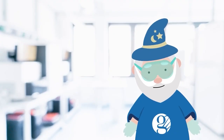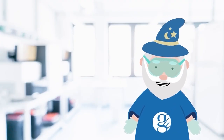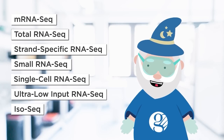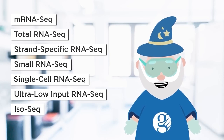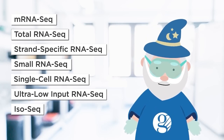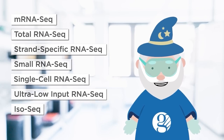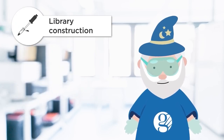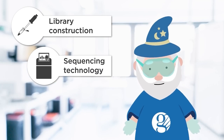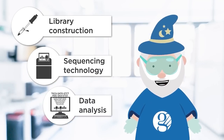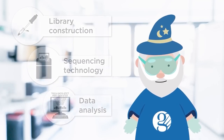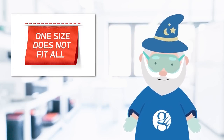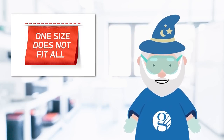The term RNA-seq encompasses a wide range of assays. Here are a few of the most common ones. They all use NGS in some way to analyze RNA sequences, but they differ in several technical aspects, including how the sequencing libraries are constructed, the technology or platform used for the sequencing reaction, and how the data is analyzed. There is no one-size-fits-all solution, as each assay gives you different information about the transcriptome.